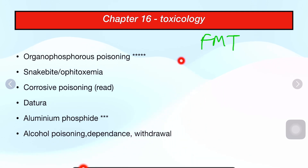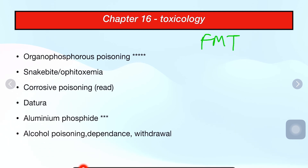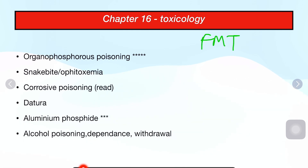Organophosphorous poisoning — both organophosphorous and aluminum phosphide have a garlic odor. These may be written as ingestion of food grain type, insecticide, pesticide, or unknown substance. For snake bite management, there is a mnemonic you should know. You should also know the difference between poisonous and non-poisonous snakes — both are important.